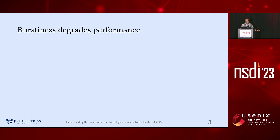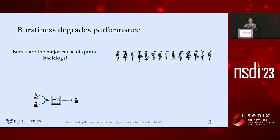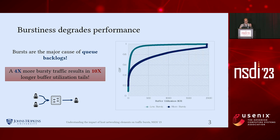To give a concrete example of the implications of burstiness, we investigate how bursts contribute to queuing delays in network switch buffers by performing simulations of a 2-to-1 incast traffic in a 40 gigabit per second setting with two types of workloads. Our results demonstrate that a workload that is four times more bursty results in 10 times higher buffer utilization tails, as shown in this CDF plot.